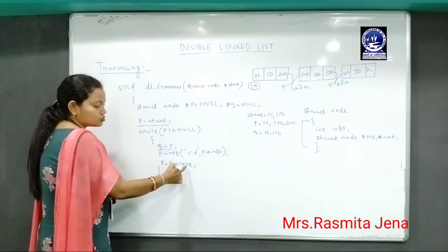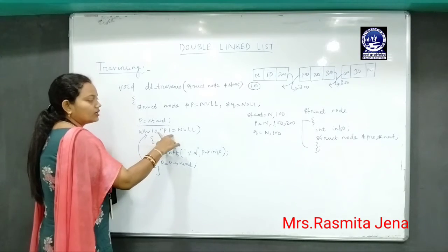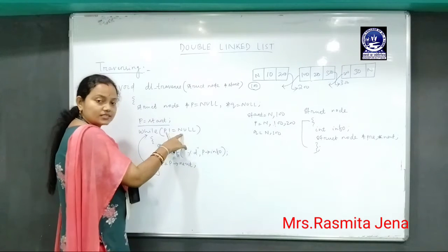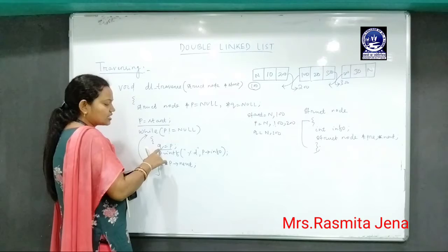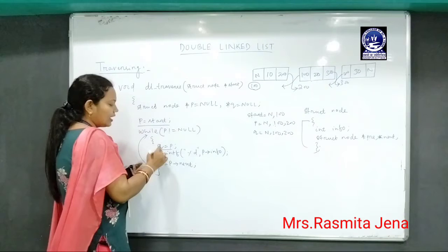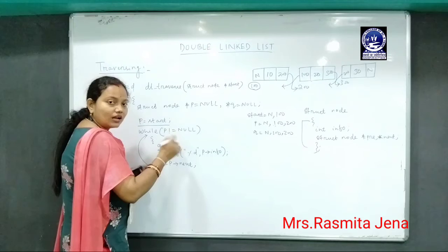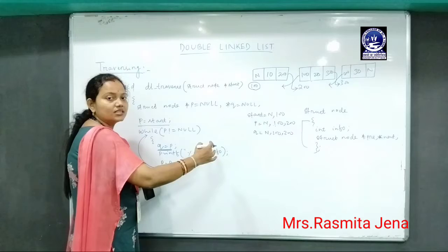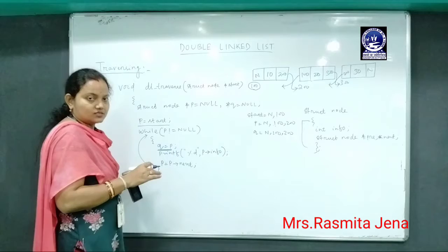I will again go back to check the condition. p is 200, and 200 is not equal to null, so the condition is true. Then q equals p, so q becomes 200. This statement stores the address of the last node recently visited as we go through forward traversal. When we reach the last node, q will store the address of that last node.